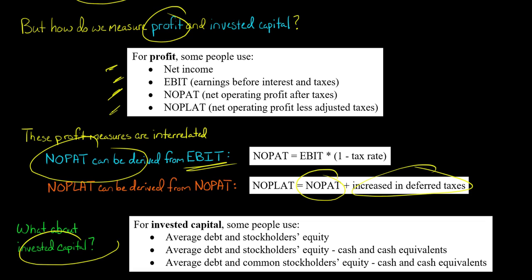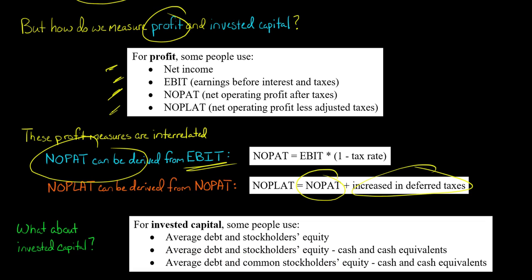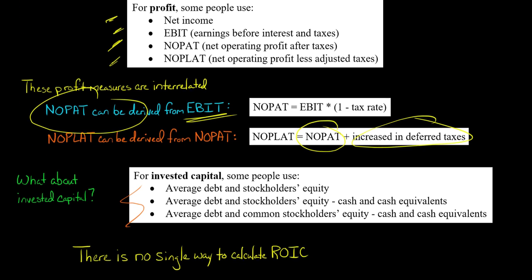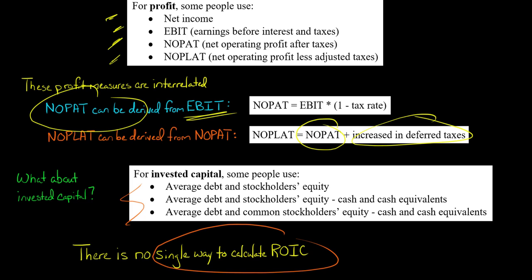When it comes to invested capital, there are multiple ways to calculate that as well. The most basic way is to take the average of the company's debt and stockholders' equity. Some people take that average and then subtract cash and cash equivalents. Others want the average of debt and common stockholders' equity only — excluding preferred equity — minus cash and cash equivalents. So those are three different ways to calculate invested capital.